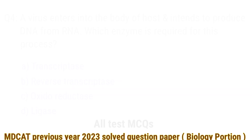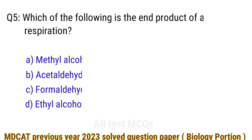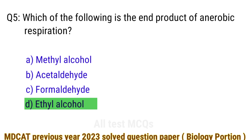Question number 5. Which of the following is the end product of anaerobic respiration? The right answer is option D: ethyl alcohol.